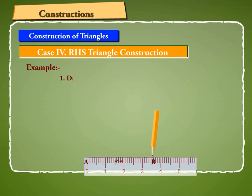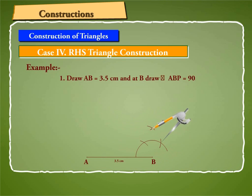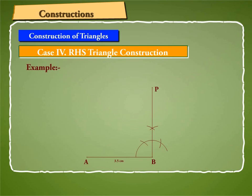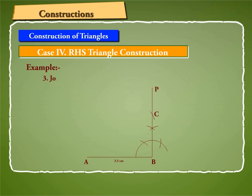Draw AB equal to 3.5 cm. At B, draw angle ABP equal to 90 degrees. With A as center and radius 4.5 cm, draw an arc meeting BP at C. Join AC. Then ABC is the required triangle.